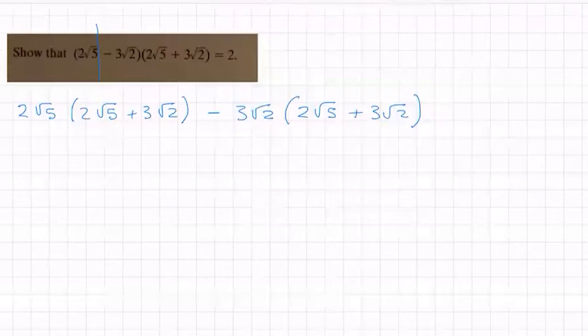Okay, so how do we multiply these out? Well, you do bit by bit. So 2 by 2 is 4, √5 by √5 is 5, plus 2 times 3 is 6, √5 by √2 is √10.